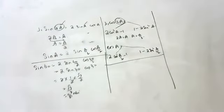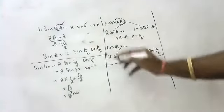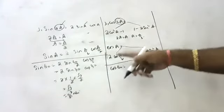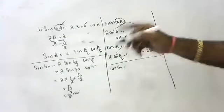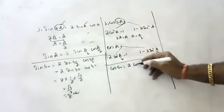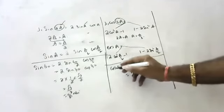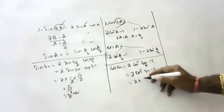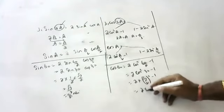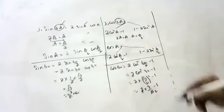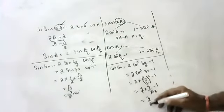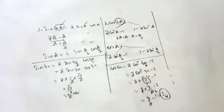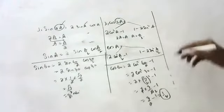Let me verify with an example. Cos 60 using the formula 2 cos²(60/2) − 1 = 2 cos²30 − 1. Cos 30 is √3/2, so 2 × (3/4) − 1 = 3/2 − 1 = 1/2. Cos 60 is 1/2. We get the same answer. If you use the other formula also, you will get the same answer. I will show you what it will be useful for in numericals.